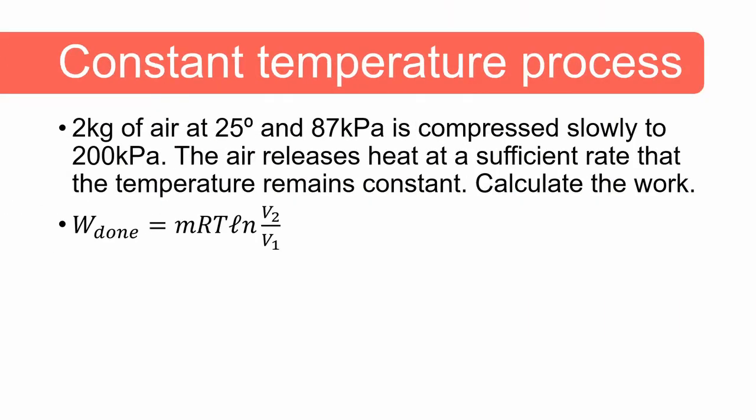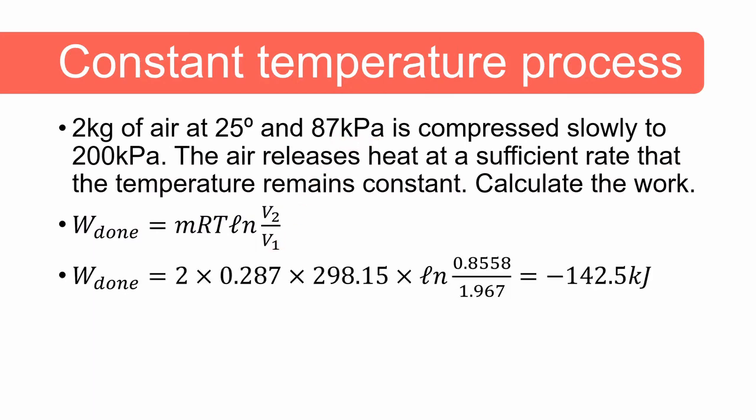The equation that we need to solve is the one that we've just shown in the previous slide and looking at it we need the values of v1 and v2. We can calculate the values of v1 and v2 using the ideal gas law because we know mass, R, and temperature are constant and we've been given the two pressure values that we can use to calculate volume 1 and volume 2. We then end up getting an answer of minus 142.5 kilojoules. This just indicates to us that it is work required to get that air from 87 kilopascal compressed to 200 kilopascal.